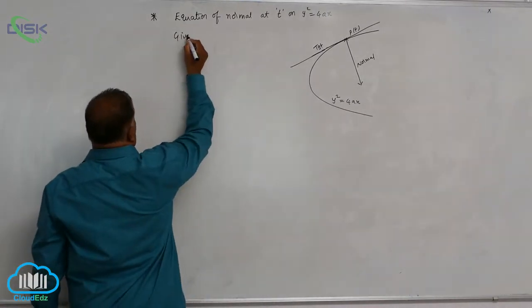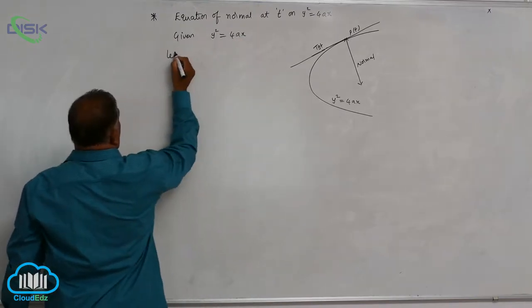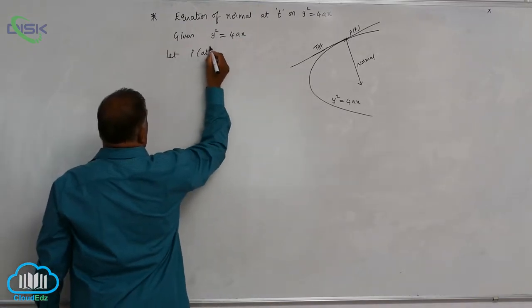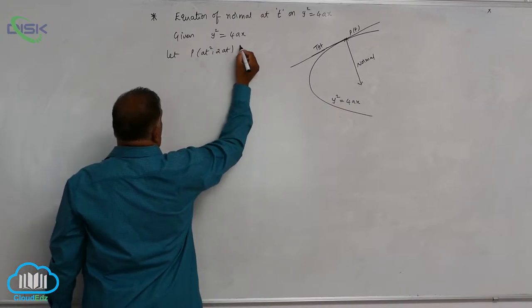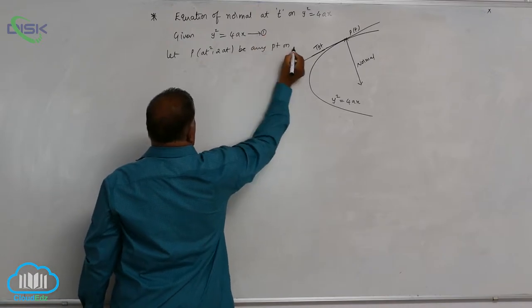Given parabola is y square equal to 4ax. Let P at square comma 2at be any point on, let us call this equation 1.